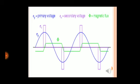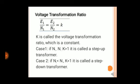The figure shows the waveform of primary voltage, secondary voltage, and magnetic flux. The voltage transformation ratio is: E1/N1 = E2/N2 = K, where K is the voltage transformation ratio — a constant. Case 1: if N2 is greater than N1, then K is greater than 1, and it is called a step-up transformer. Case 2: if N2 is smaller than N1, then K is smaller than 1, and it is called a step-down transformer.